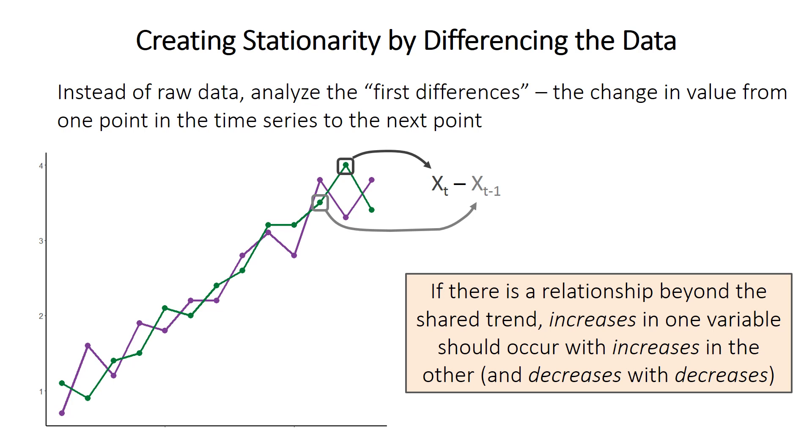So the basis or the rationale for this process is that if there is a true relationship that's not just caused by the fact that they both increase over time, an increase in one variable should occur at the same time as an increase in the other. When one increases by a lot, the other should as well. If one decreases by a small amount, the other should decrease by a small amount.